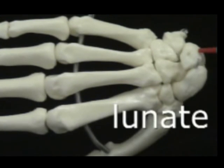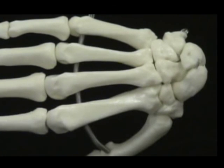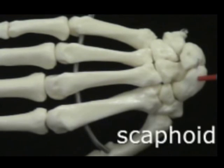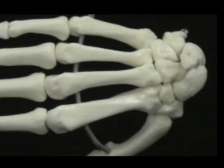Here's the lunate that articulates with the ulna. Again, they kind of rhyme, ulna and lunate. And then the scaphoid bone that articulates with the radius. Those would be the carpal bones. Practice this video over and over again because carpal bones can be very difficult to learn. Repetition will be your best teacher.